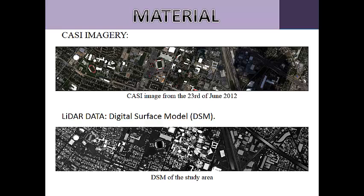We had a CASI image with 144 bands, with a spatial resolution of 1.5 m and a spectral width of 380 nm to 1,050 nm. The acquisition was made on 23 June 2012. The flying height was 1,675 m. Due to the presence of clouds at the time of the acquisition, the image has areas where cloud shadow is present. The LiDAR data consisted of a digital surface model containing the elevation of the land and urban elements above the geoid 2012a.